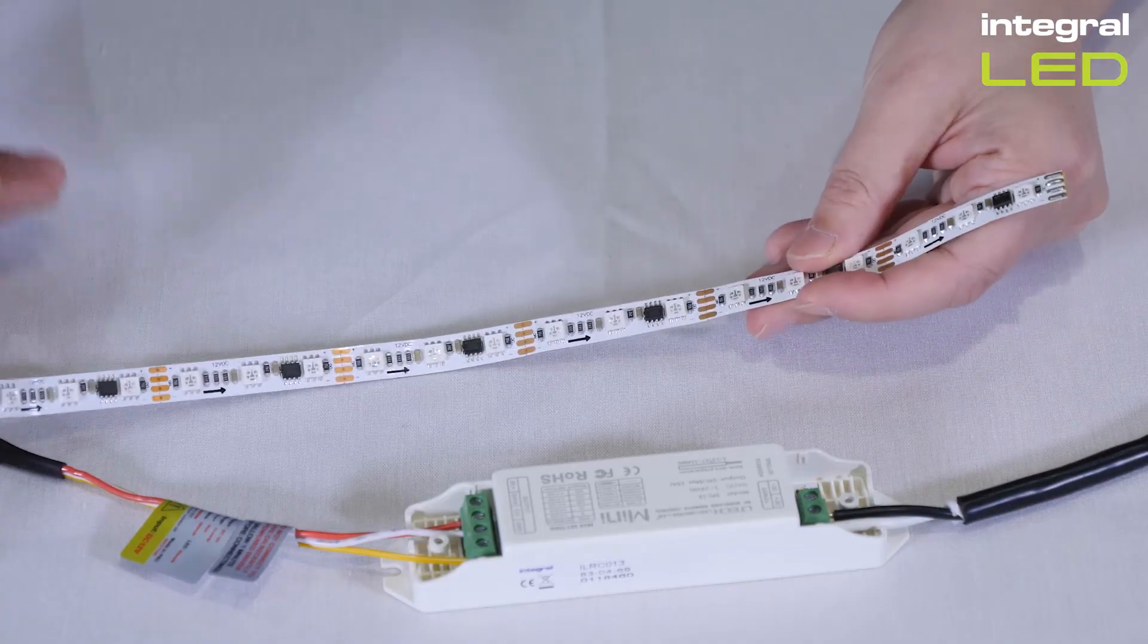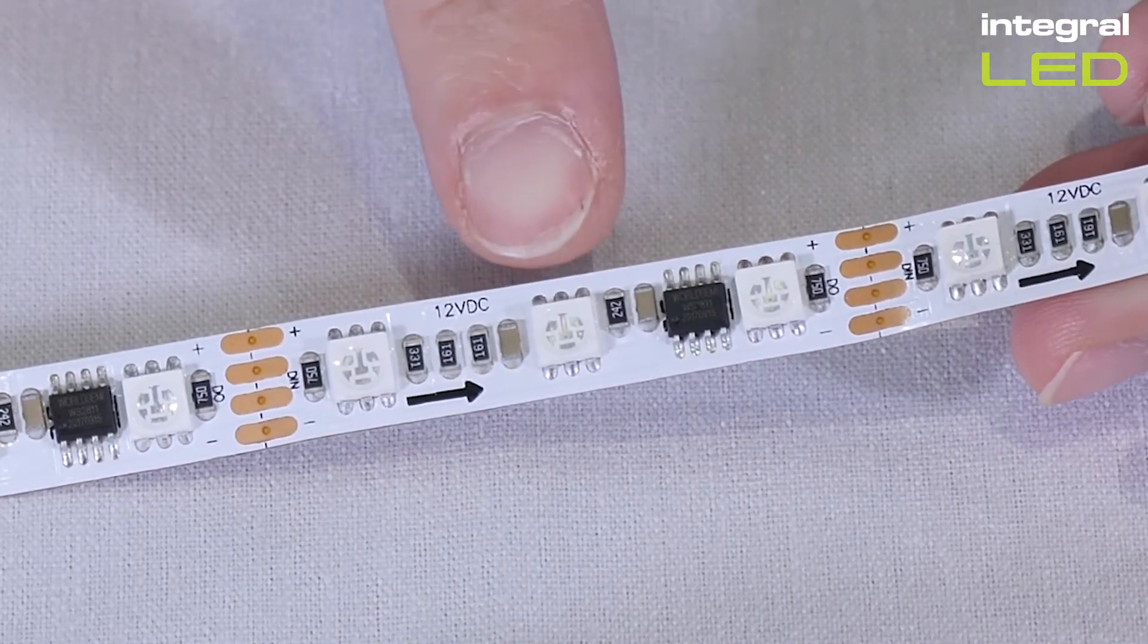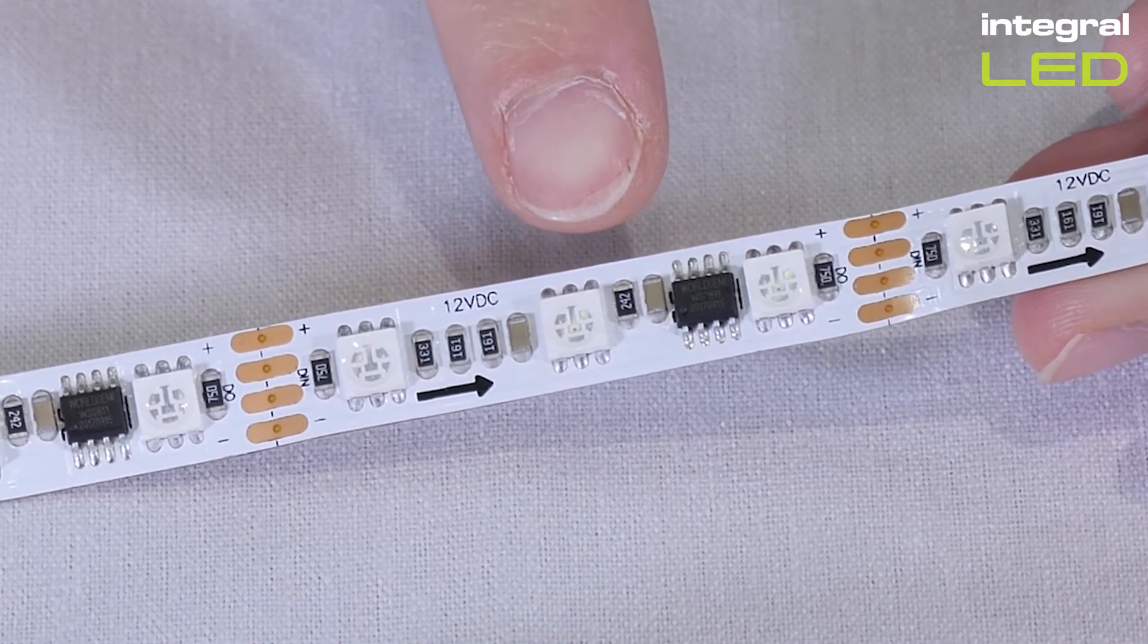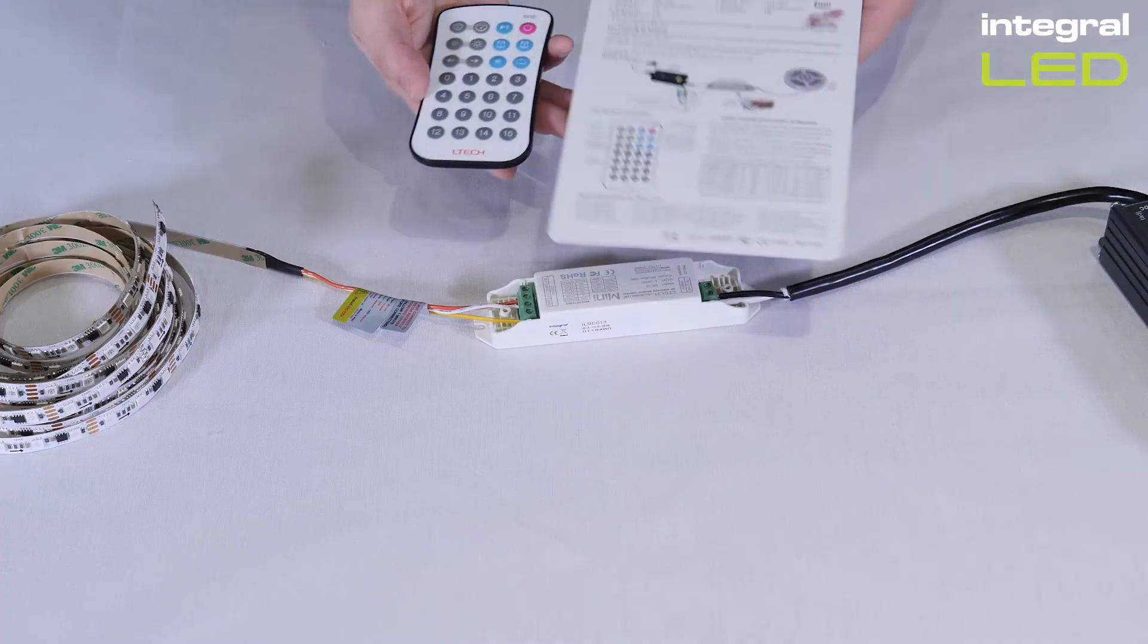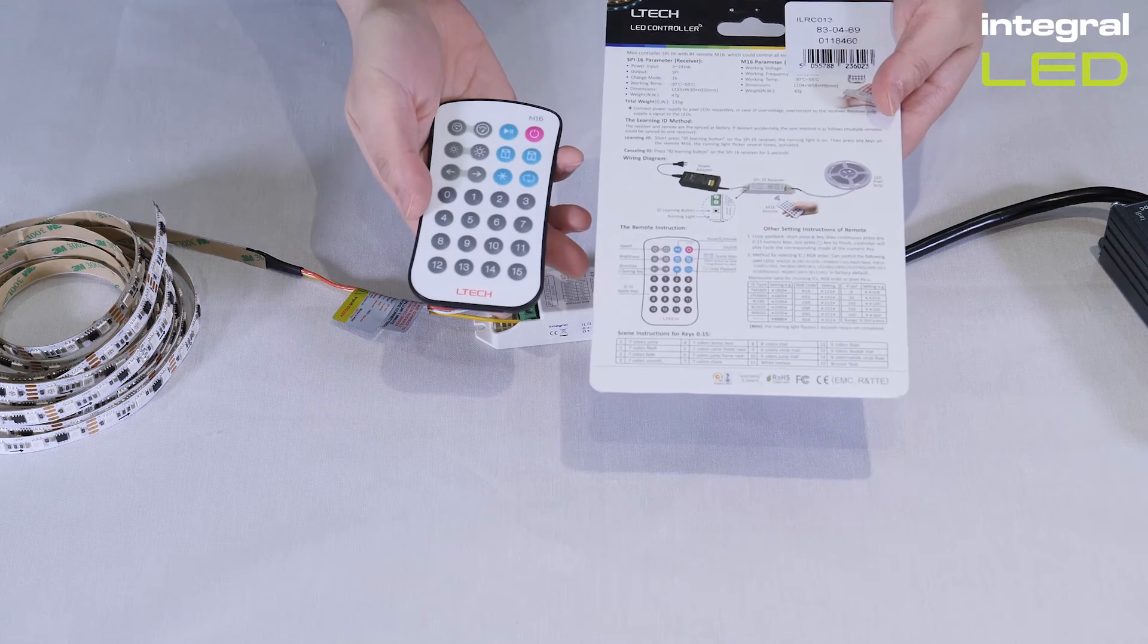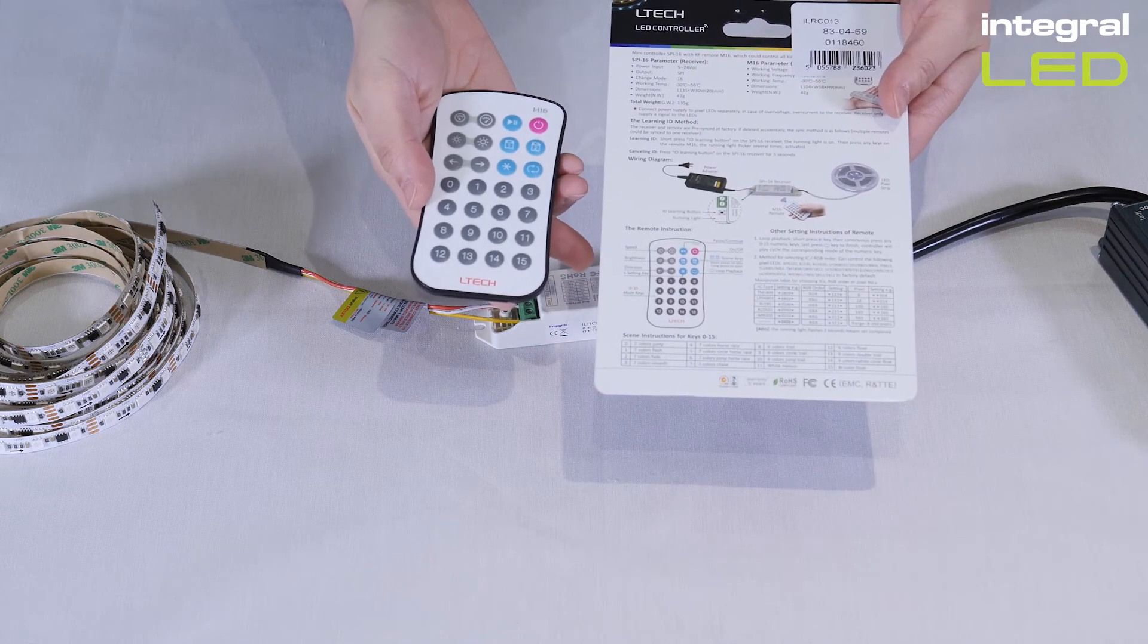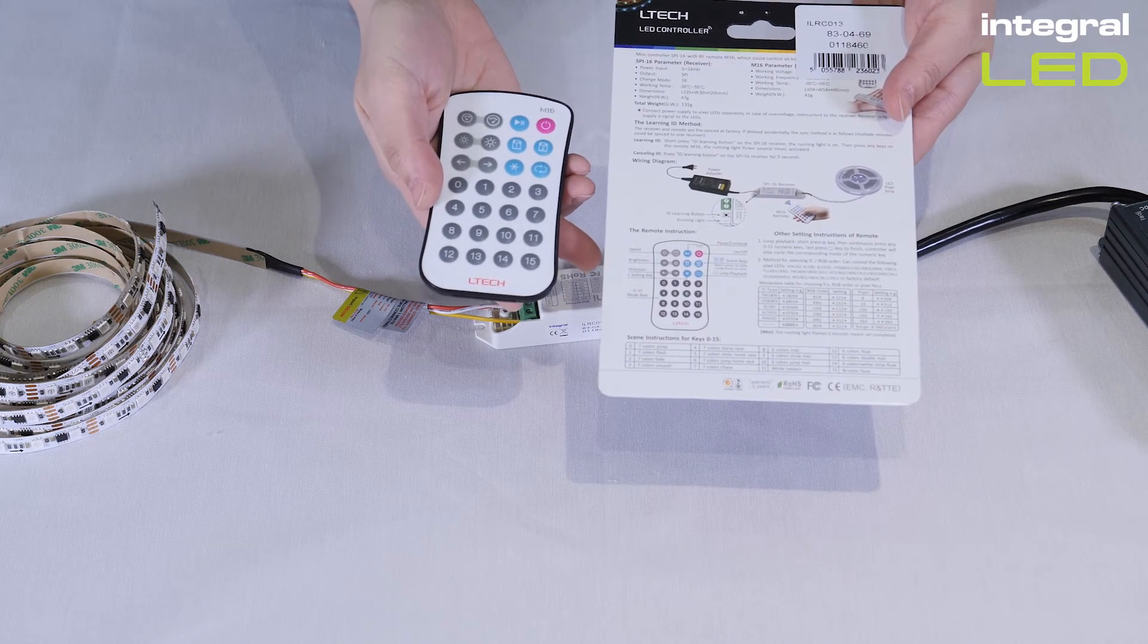The integral LED digital pixel RGB strip contains one IC control or pixel chip per three LEDs. Refer to the instructions on the back of the remote control packaging for guidance on configuring the correct setting for your strip.